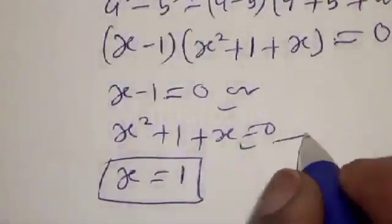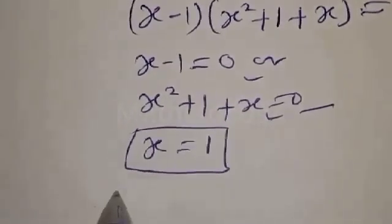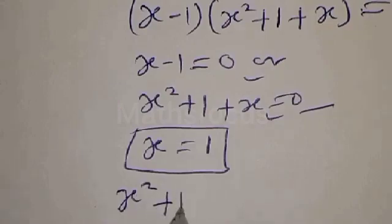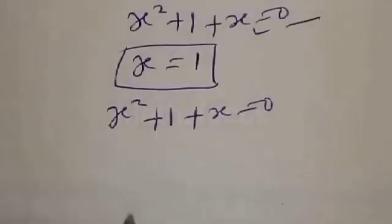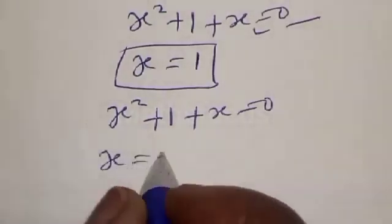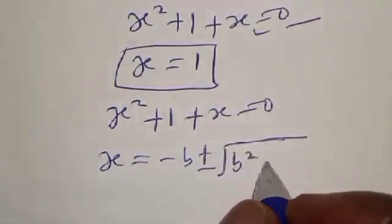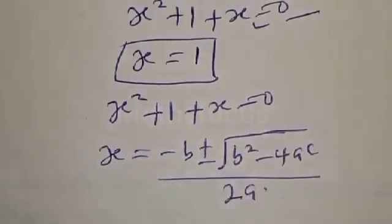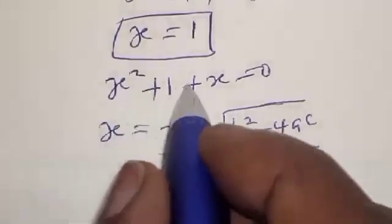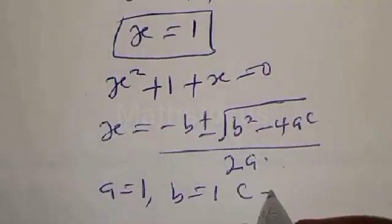From the second factor, here is a quadratic equation. Let's solve it using the quadratic general formula. We have X squared plus X plus 1 equal to 0. The quadratic formula is X equals minus B plus or minus square root of B squared minus 4AC, all over 2A. From the equation, A equals 1, B equals 1, and C equals 1.